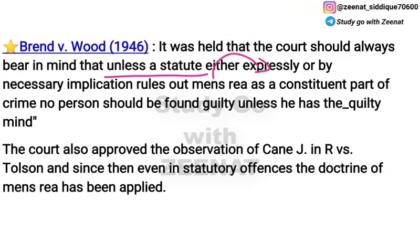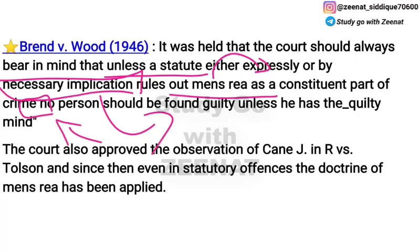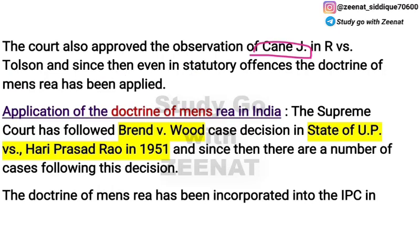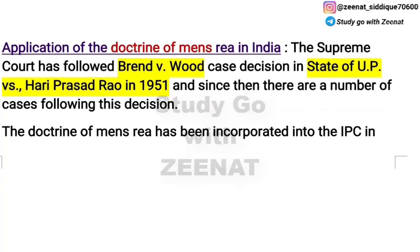In Brand v Wood, the House of Lords finally held that until and unless a statute either expressly or by necessary implication states that mens rea is not required — that mens rea is not a necessary element of the crime — until then no person will be held guilty for an act committed without guilty mind. Justice Cave's observation in R v Tolson was approved in this case.